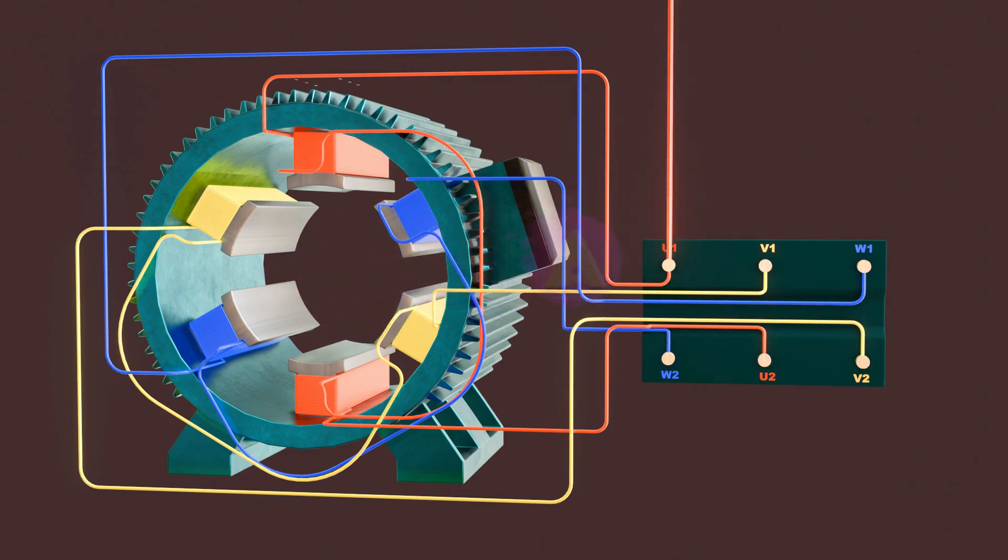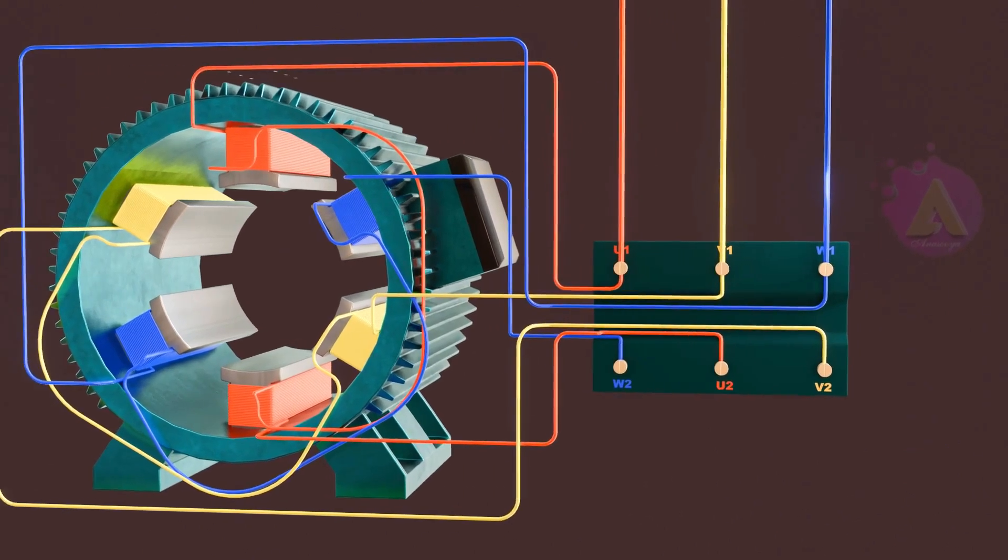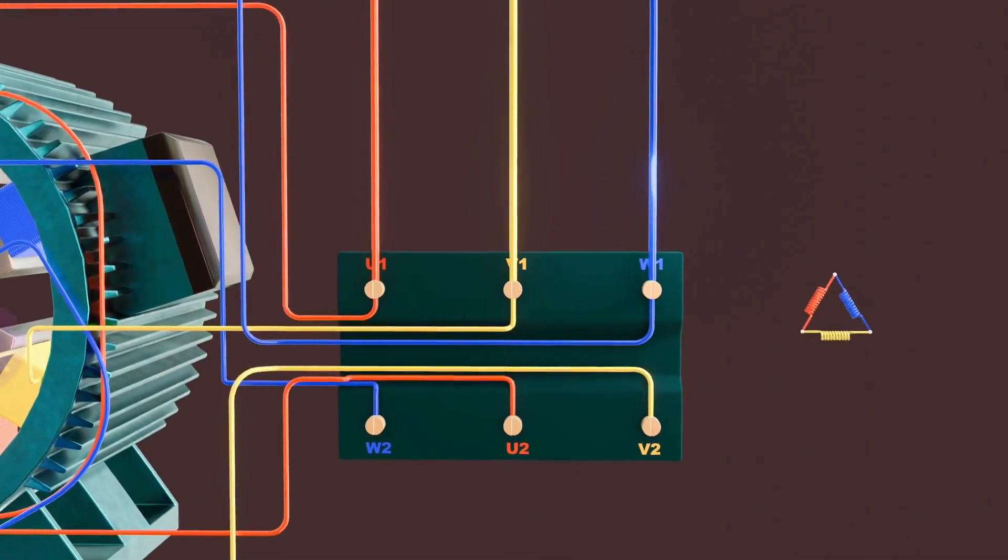We now bring in a 3-phase power supply and connect this to the respective terminals. For the motor to run we need to complete the circuit, and there are two ways to do this.